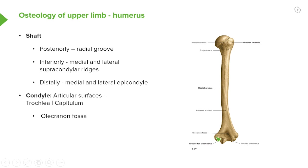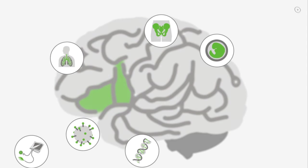The medial and lateral supracondylar ridges give rise to the medial epicondyle and the lateral epicondyle — the same features visible on the anterior surface. On the posterior surface of the distal humerus, we have the olecranon fossa, an important shallow depression for the olecranon, which is a bony structure on the ulna. We'll look at that next as we examine the ulna.